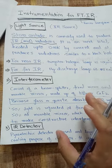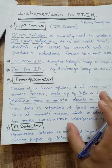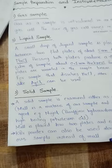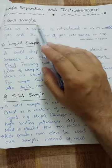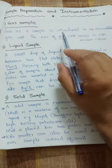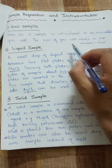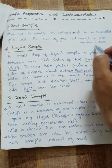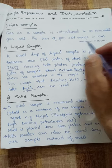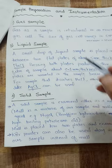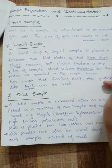Then this IR radiation falls on the sample in the sample cell, where the radiations are absorbed. The sample cell may be a gas sample, liquid sample, or solid sample. If we have a gas sample, it is introduced into an evacuated gas cell. The size of the gas cell varies — it can be from 1 centimeter to 10 centimeters.